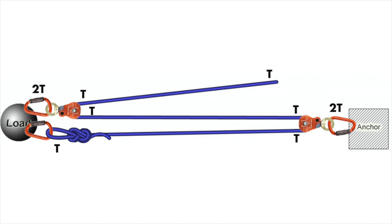Now we've labeled all the components in our system, we can add them up to find the forces on our load. At the load we have 2T from the pulley and T from the knot, giving us a total of 3T. That means we input a force of T and the load experiences a force of 3T, confirming that this is a 3 to 1.